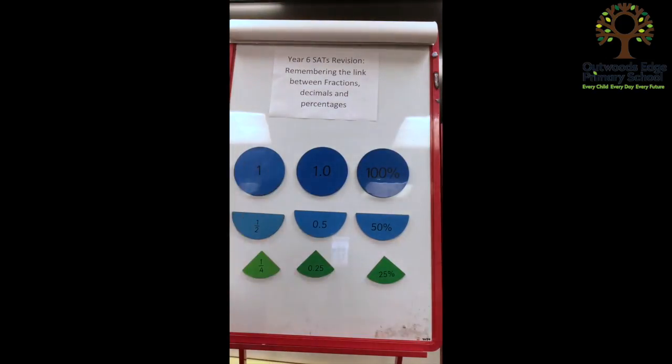The next one that they need to try and remember which is really helpful if they can just have that memorised is 1 tenth. And 1 tenth is equivalent to 0.1, they match up really nicely, which is the same as 10%.